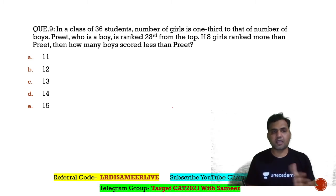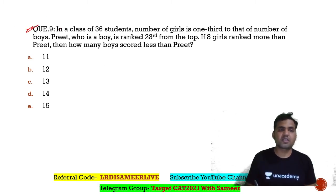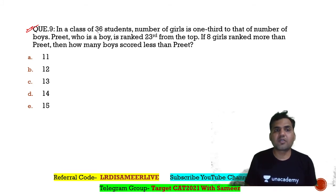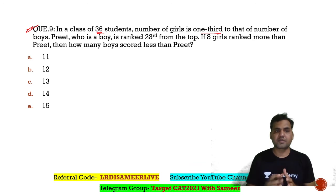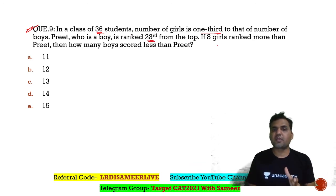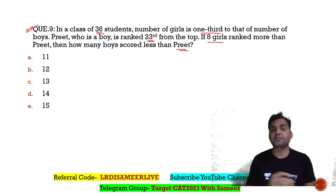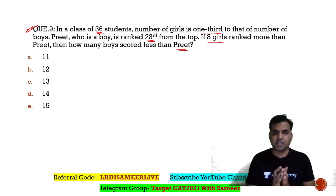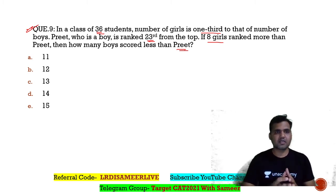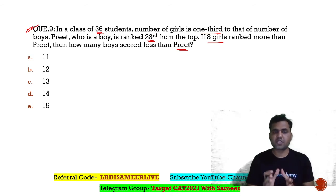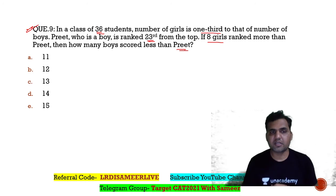Question number 9 is on the screen. It says: in a class of 36 students, the number of girls is one-third the number of boys. Preet, who is a boy, is ranked 23rd from the top. If eight girls are ranked higher than Preet, how many boys scored less than Preet? These ranking-based questions are very important for the CMAT exam — every year you'll find two or three questions from ranking in the CMAT reasoning section.